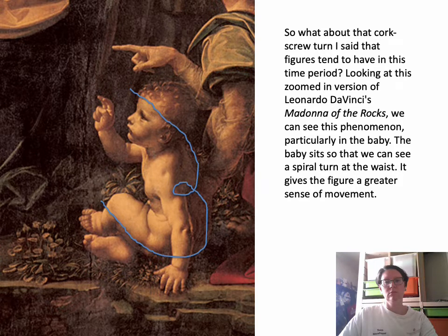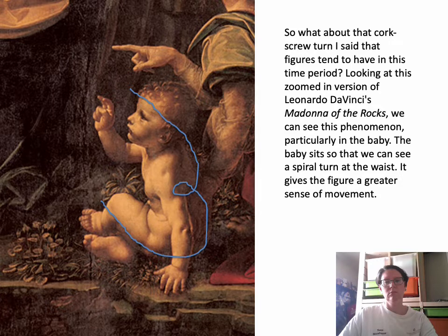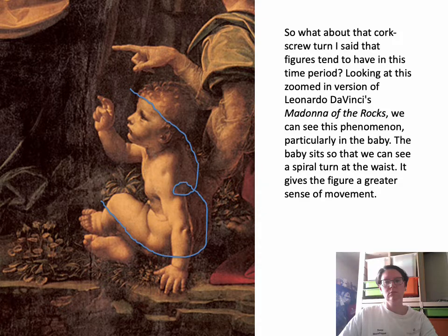Just to show I don't favor Raphael over da Vinci, I wanted to show you the corkscrew turn of the baby's body in da Vinci's work as well. This is a zoomed-in version of da Vinci's Madonna of the Rocks — you can see the baby pointing up to Jesus in a sacred conversation. The baby sits with its bottom one direction and then its shoulders slightly turned towards the Madonna. This gives the figure a greater sense of movement even though in the painting he's sitting still, and it accentuates the gesture we see.